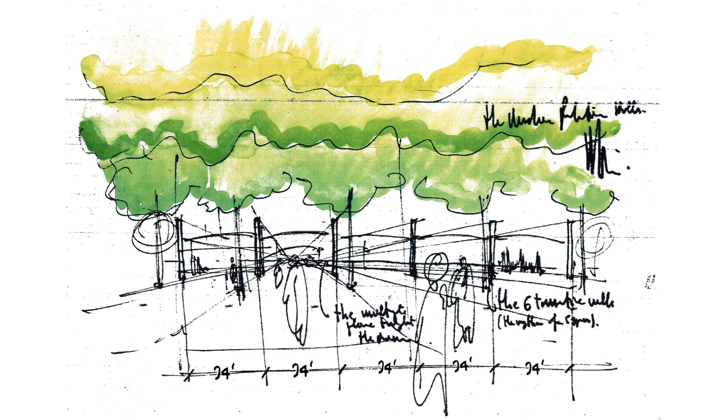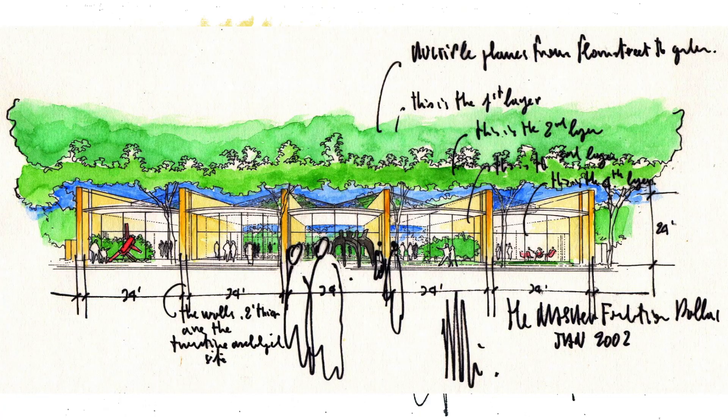Renzo Piano envisioned a classic ruin, the sort that you would see around the Mediterranean, when he created this building around six parallel walls. The entire front and back and ceiling are glass, so the focus is really on these six walls.